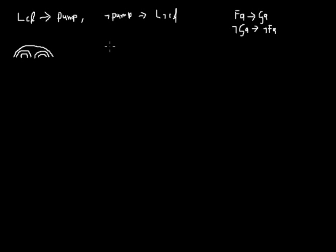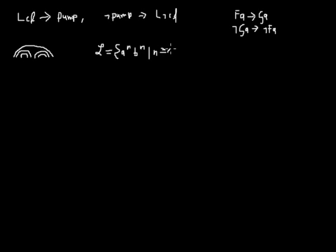Remember, you can't prove with the pumping lemma that the language is context-free, but I will use a context-free language to make clear how the pumping lemma works. The language I use is a to the power of n, b to the power of n, with n greater or equal to 1. Let's draw a pushdown automaton for it.